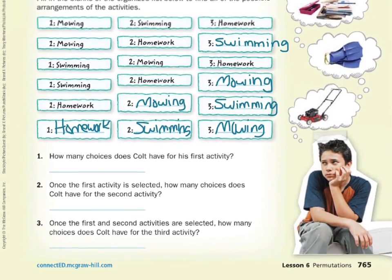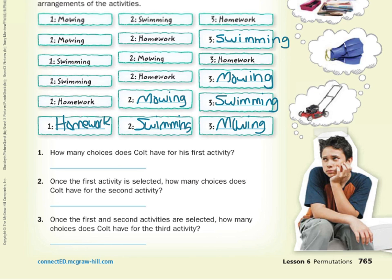How many choices does Colt have for his first activity? Well, he could choose from either mowing, swimming, or homework. So he has three choices. Now, once he has made that choice, how many choices does he have for the second activity? He's made a choice, he's not going to repeat that choice. So now he's down to two choices for the second activity. And after the first and second activities are selected, he's got one activity left. So there's only one choice left for the third activity.